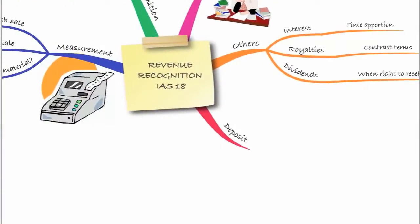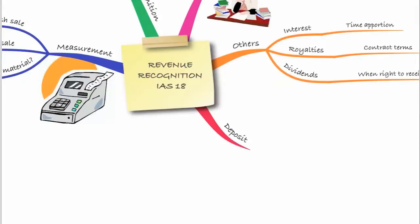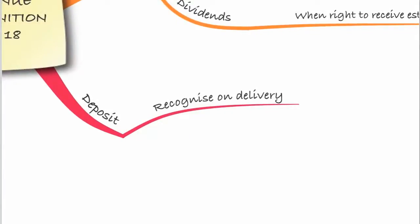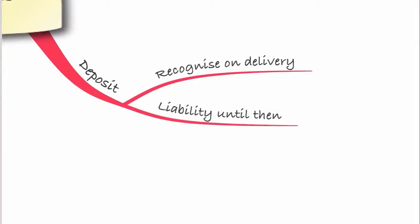Also look out for deposits. If a customer has paid you a non-refundable deposit, you can recognise the revenue straight away because you don't have to pay it back. But if it is refundable — if the transaction doesn't occur — you can only recognise it once the goods are delivered. Until then, you hold it as a liability: debit cash, credit a liability, until the goods are delivered and then recognise the revenue.